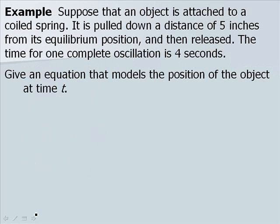Now let's look at one last example. Suppose that an object is attached to a coiled spring. It is pulled down a distance of 5 inches from its equilibrium position and then released. The time for one complete oscillation is 4 seconds. Give an equation that models the position of the object at time t.